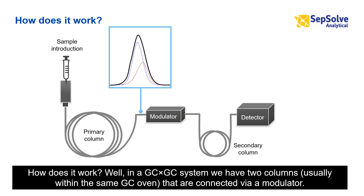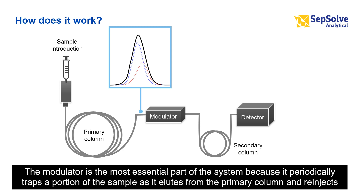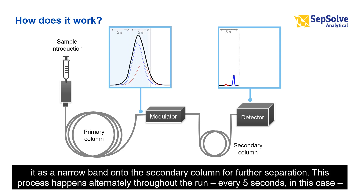How does it work? In a GC×GC system, we have two columns, usually within the same GC oven, that are connected via a modulator. The modulator is the most essential part of the system because it periodically traps a portion of the sample as it elutes from the primary column and re-injects it as a narrow band onto the secondary column for further separation.